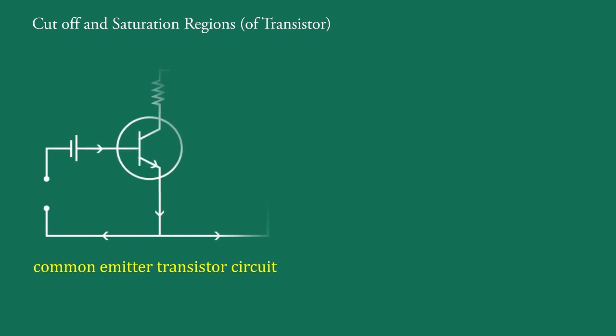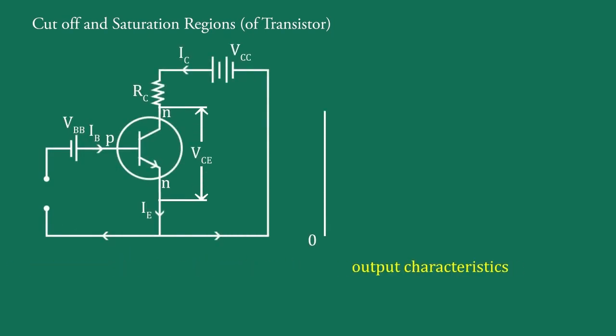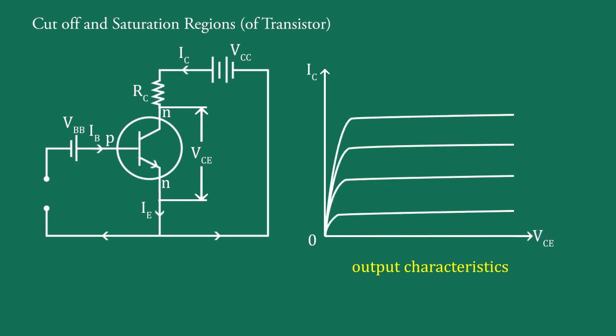Cut-off and saturation regions. This is a common emitter transistor circuit and this is the output characteristics, in which this is the DC load line.